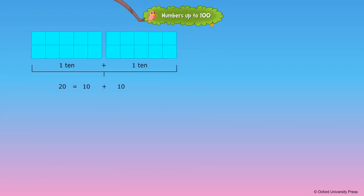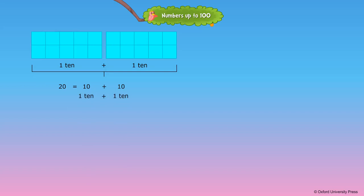1 ten and 1 ten makes 20. When 1 one is added to 2 tens, we get 21. Similarly, we keep on adding 1, 2, 3, 4, 5, 6, 7, 8, 9, and 10 to the number 20 until we get 30.